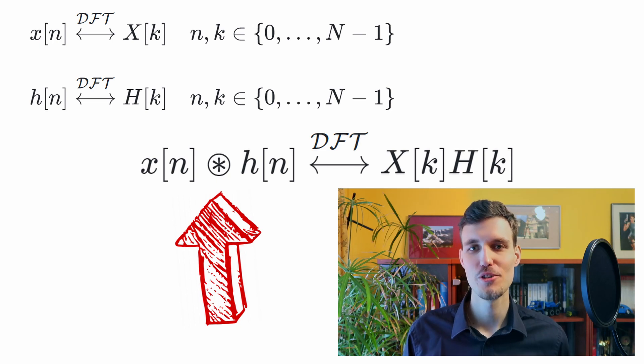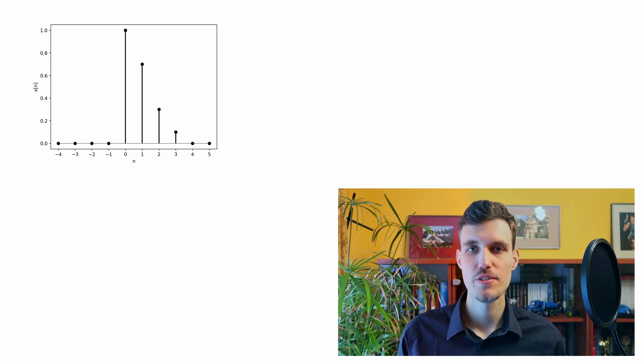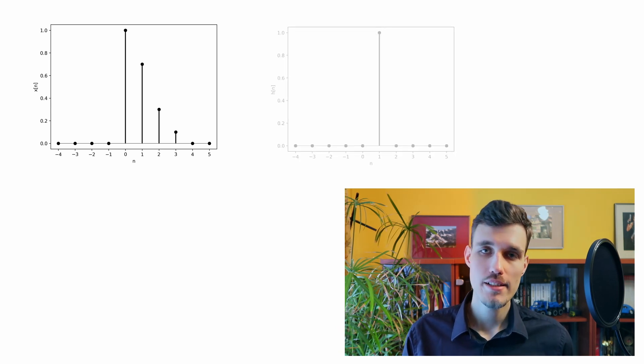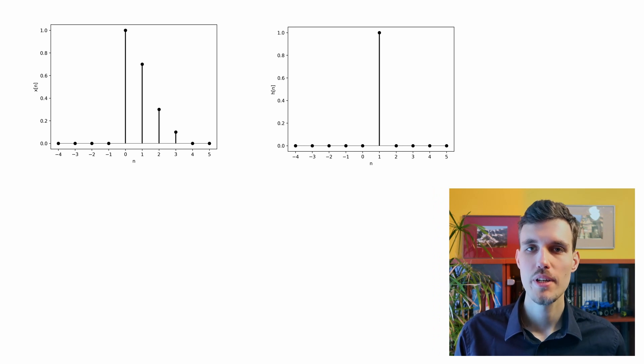What is the circular convolution? Let's look at an example. Here we have a signal x which is four samples long and signal h which is two samples long because it's a discrete time impulse delayed by one sample.